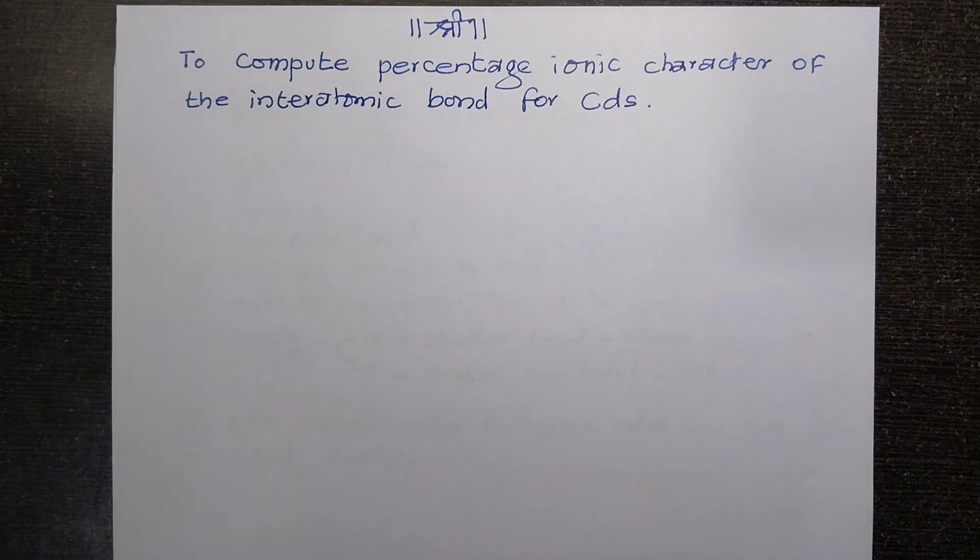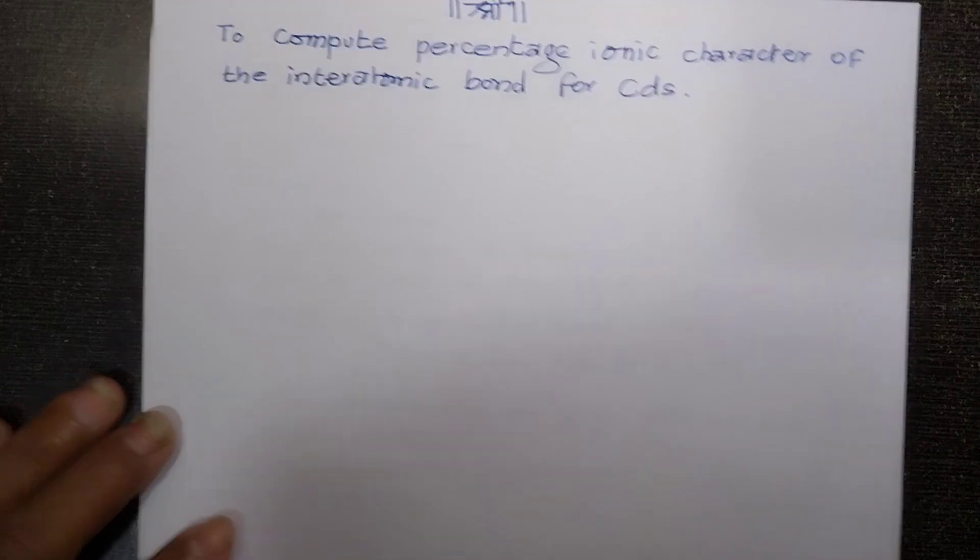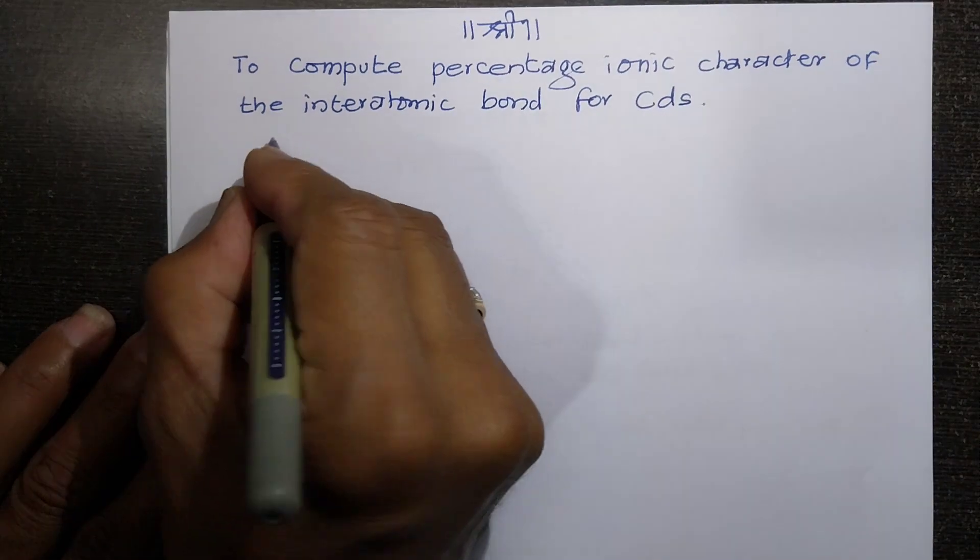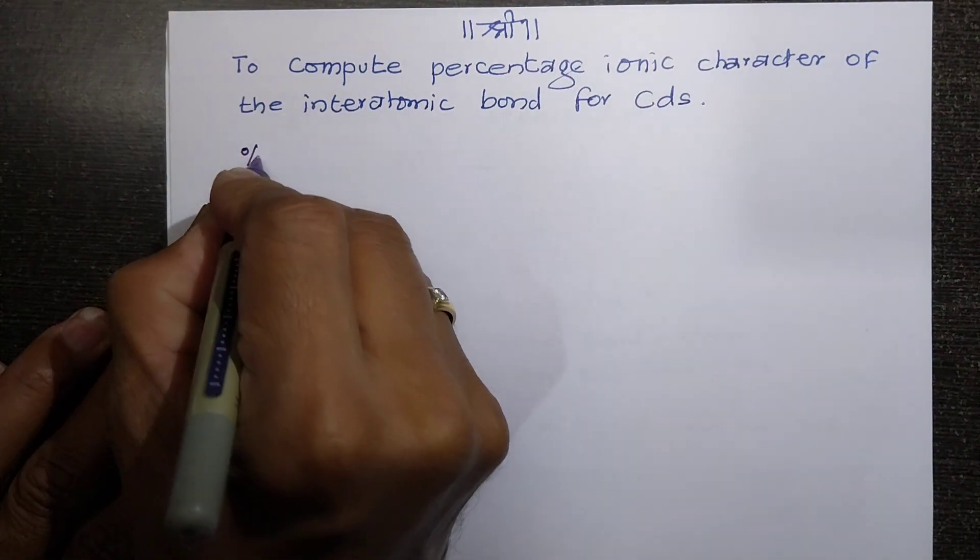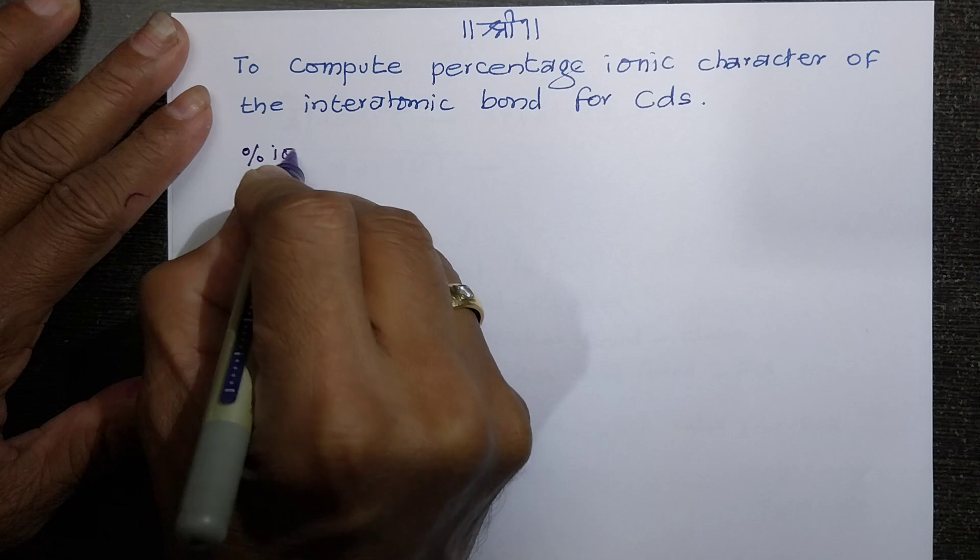Now the equation for finding the percentage ionic character is written as percentage ionic character